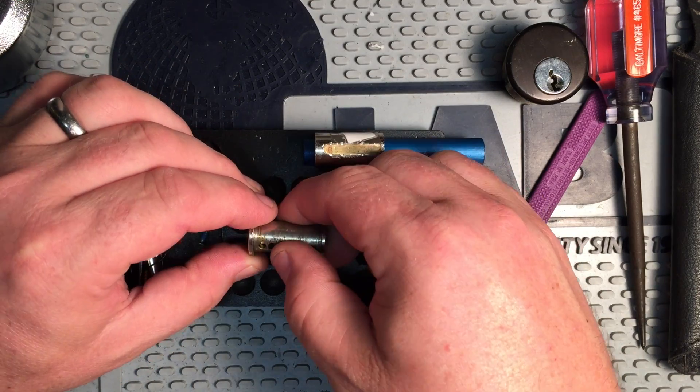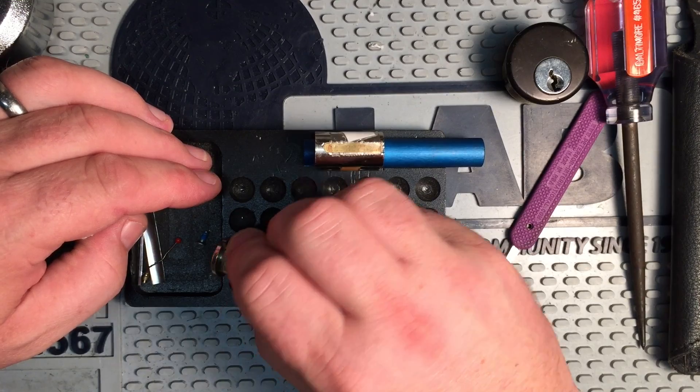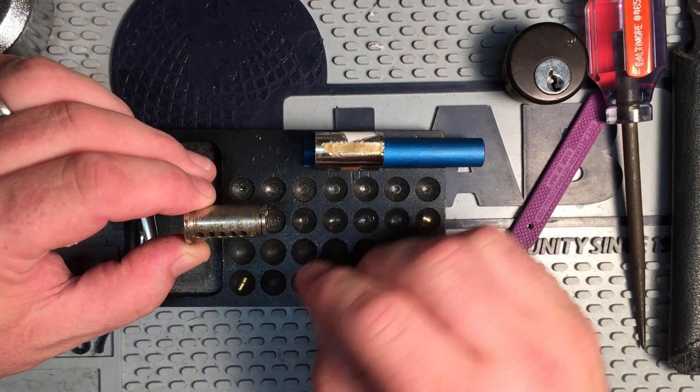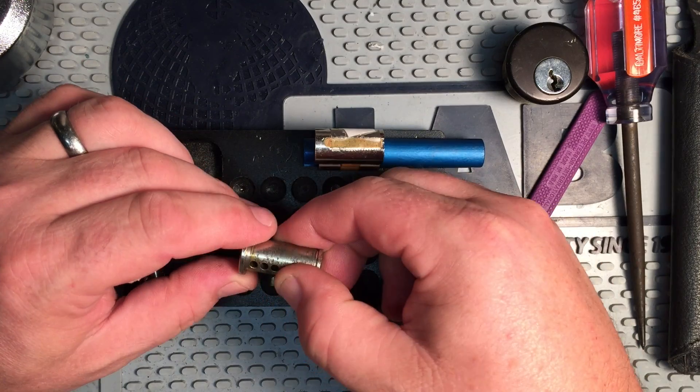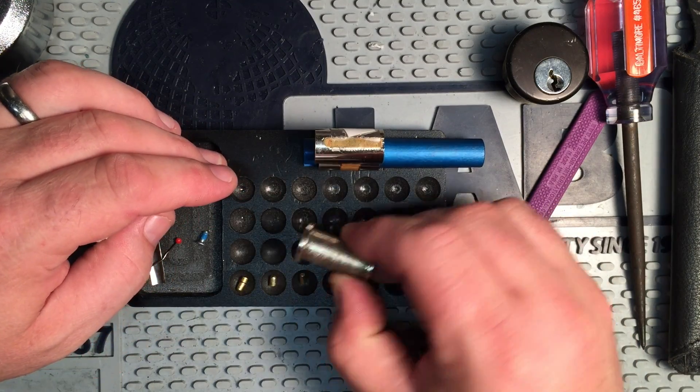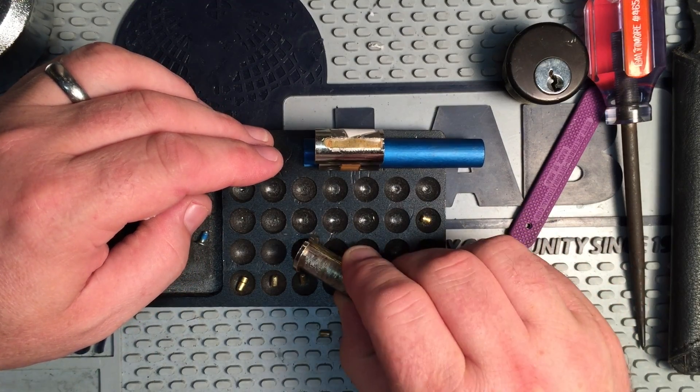So, take a look at our keypins. Looks like we got two keypins in chamber one. One keypin in chamber two, one keypin in chamber three, oops.